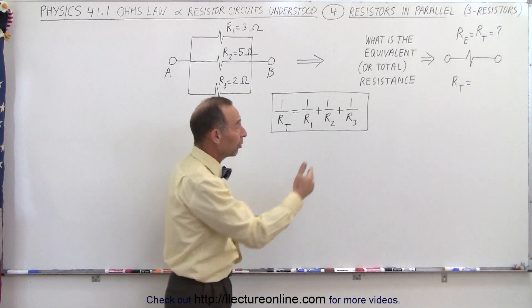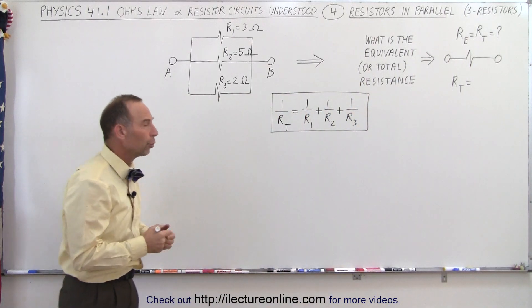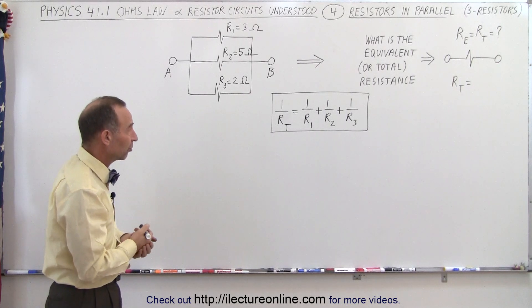Now, if there were four or five, you go plus one over R4 plus one over R5 and so forth. That's how we calculate the total or equivalent resistance in the circuit that has three or more resistors in parallel.